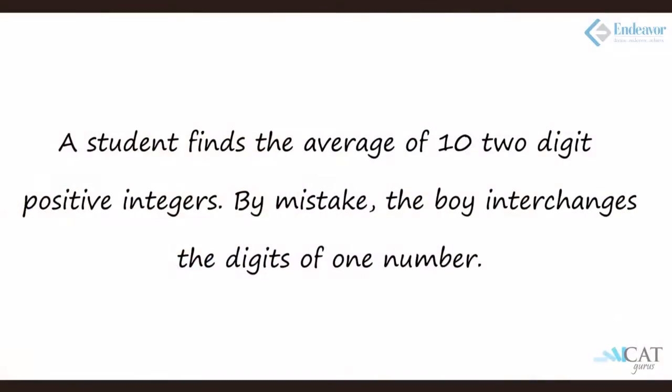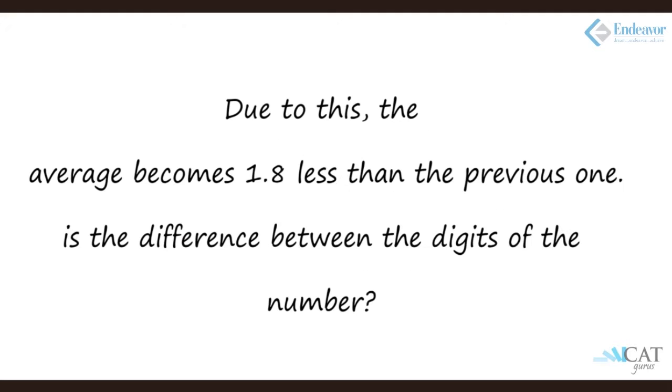Let us look at another example. A student finds the average of 10 two-digit positive integers. By mistake, the boy interchanges the digits of one number. Due to this, the average becomes 1.8 less than the previous one. What is the difference between the digits of the number? Let us assume the two-digit number. Let it be ab. So we write it mathematically as 10a plus b. Now let us reverse it—it becomes 10b plus a.